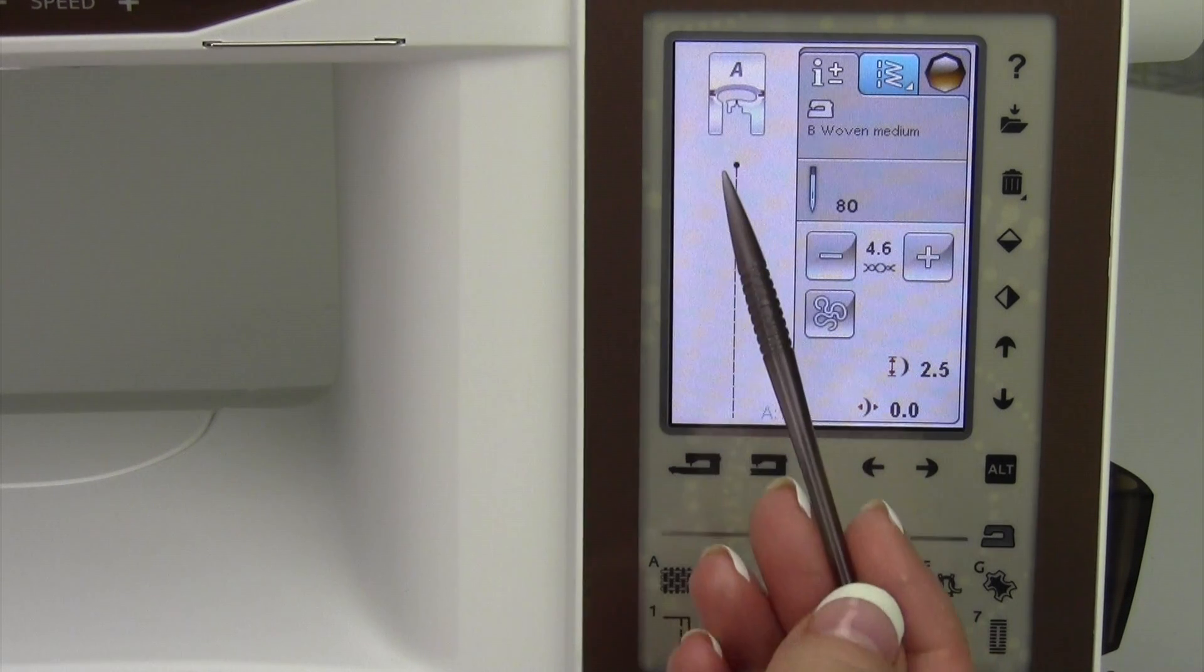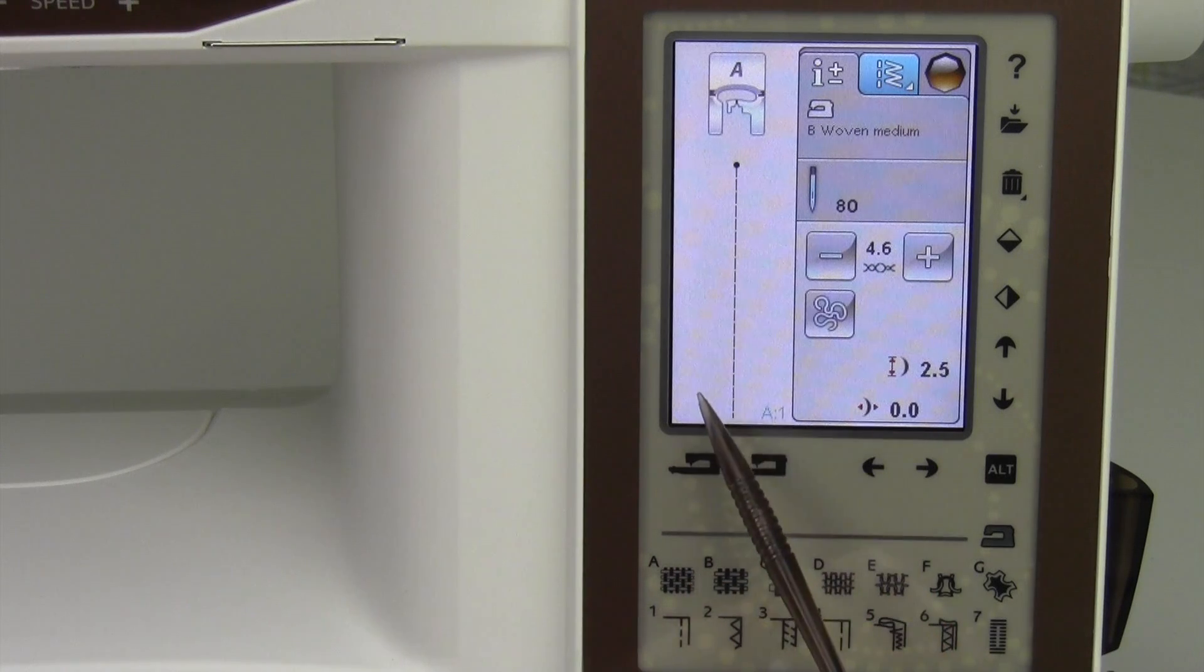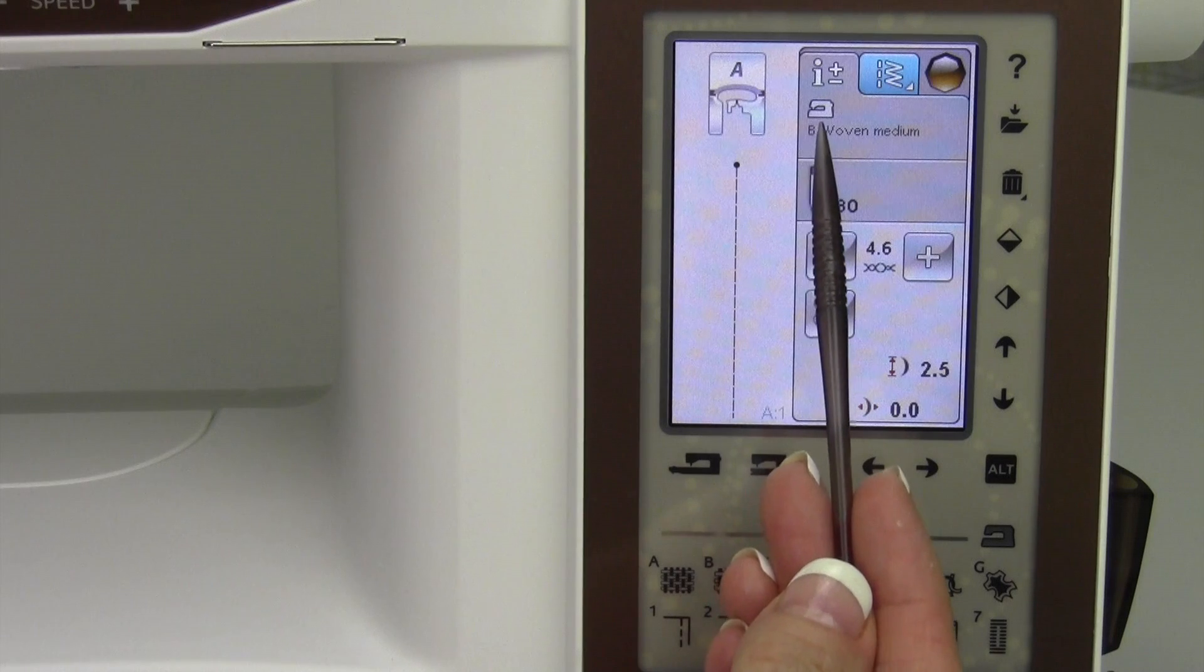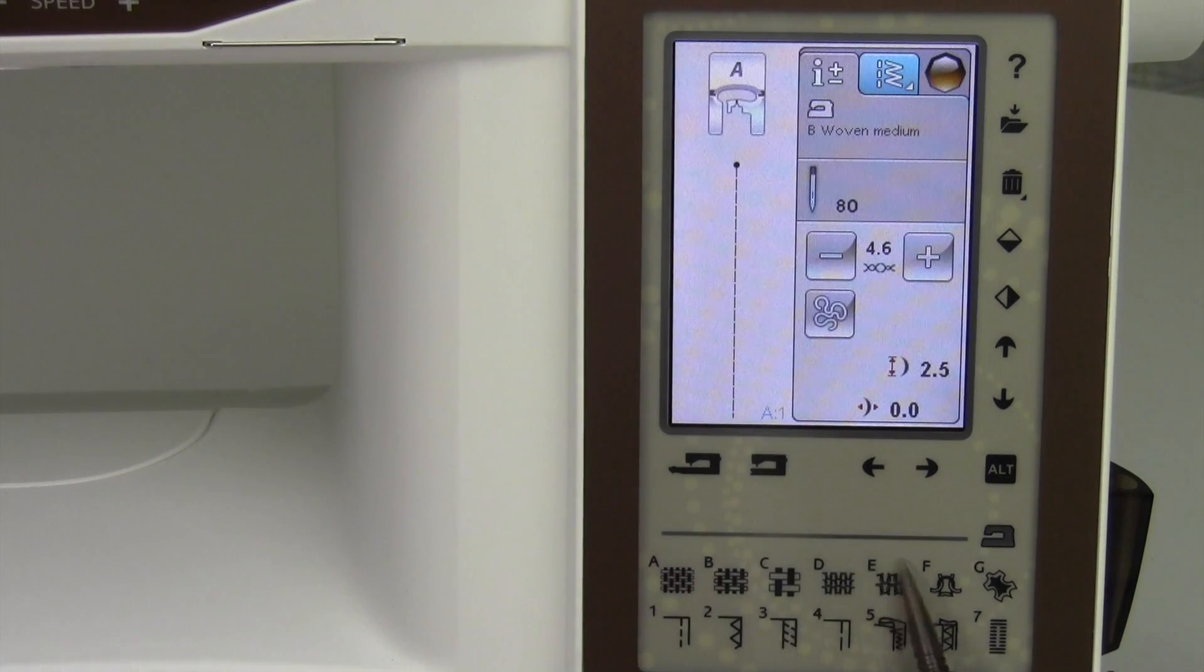When you turn the machine on, you will be brought to a straight stitch and the last fabric that you had selected within the sewing advisor. That's this area down below. We'll go into that in more detail throughout the videos as we go.